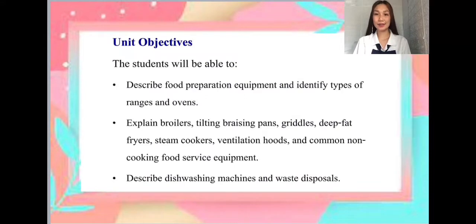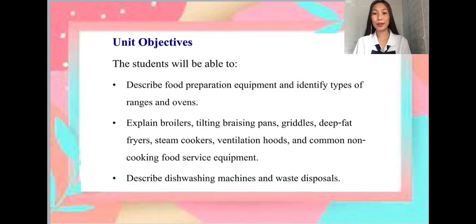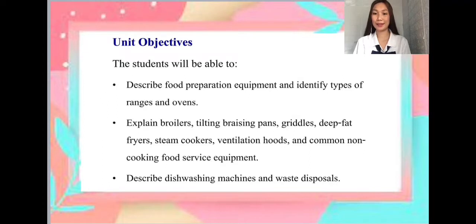Unit Objectives: The students will be able to, first, describe food preparation equipment and identify types of ranges and ovens. Second, explain broilers, tilting braising pans, griddles, deep fat fryers, steam cookers, ventilation hoods, and common non-cooking food service equipment.